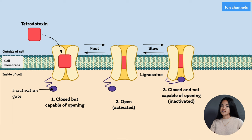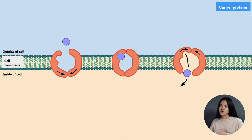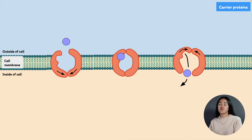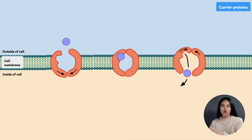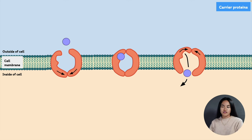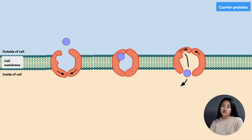Let's now move on to the second type of protein target for drug action — carrier proteins. Carrier proteins are membrane proteins that transport molecules across cell membranes. They don't form an open channel or pore between the inside and outside of the cell. Instead, carrier proteins take on different conformational shapes and shuttle the molecule from one side to the other.